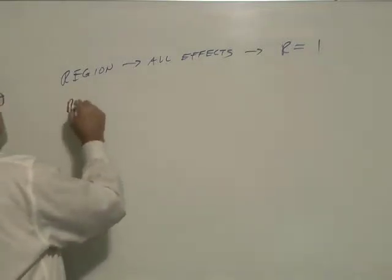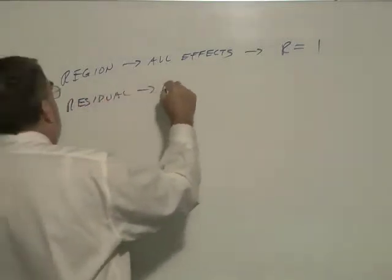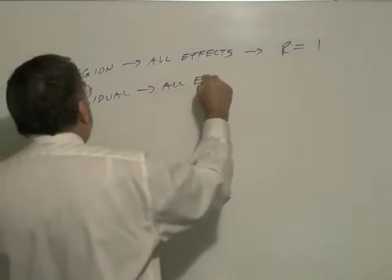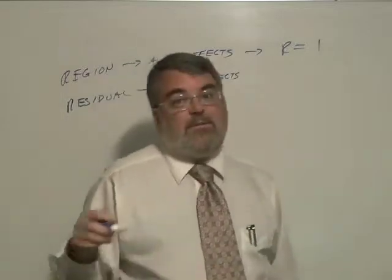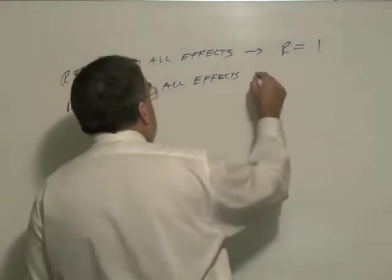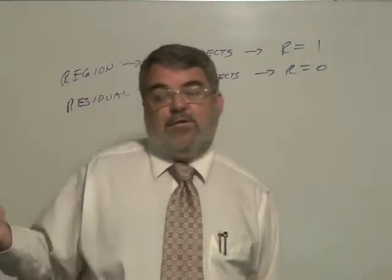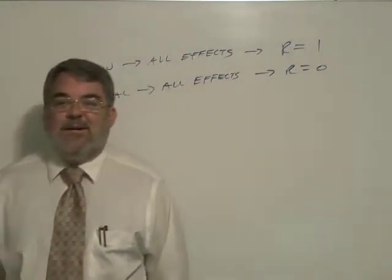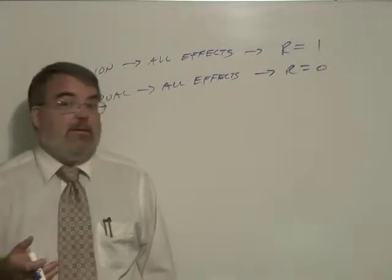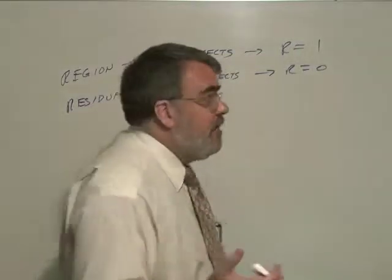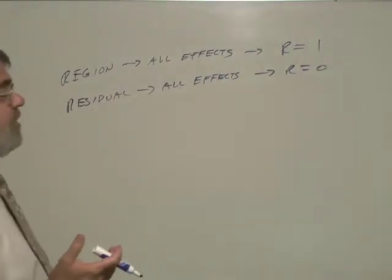If the residual variable, or residual variables, had all the effects, and the region had nothing to do with it whatsoever, then R would be 0. In other words, there would be no relationship between region and the national average on violent crime rates. So that would be the other extreme.